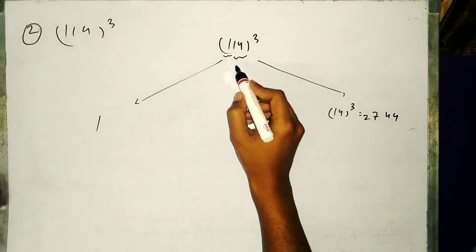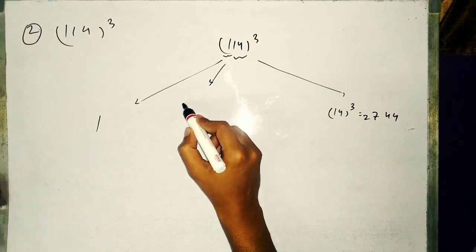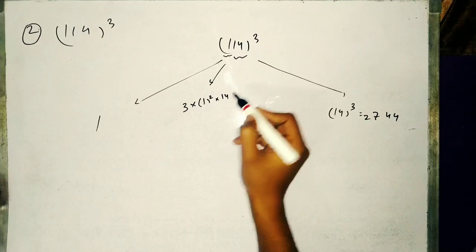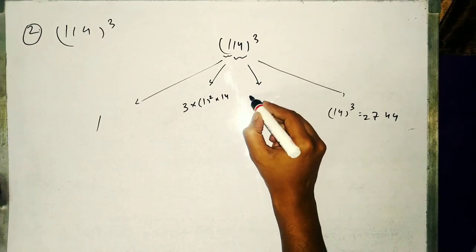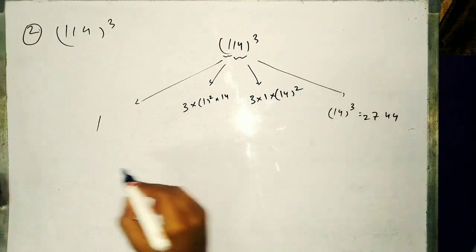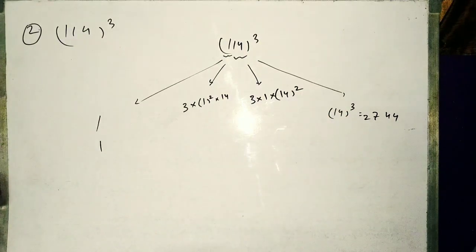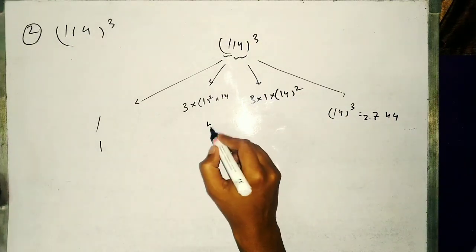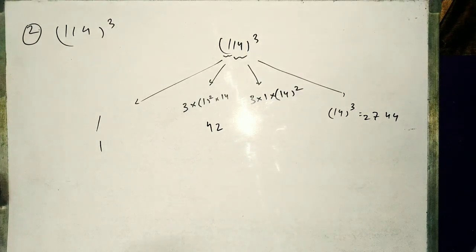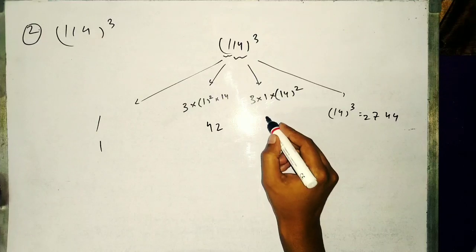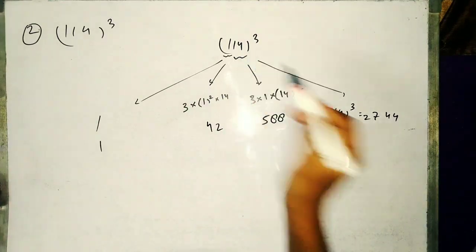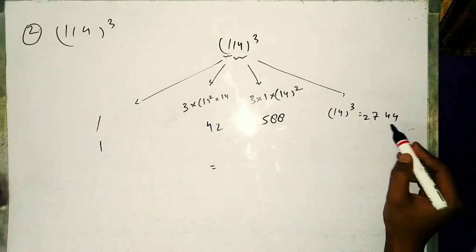Second step: 3 into first digit square into second digit 14, and 3 into first digit into second digit square 14 squared is 42 and 3 into 196 will be 588.